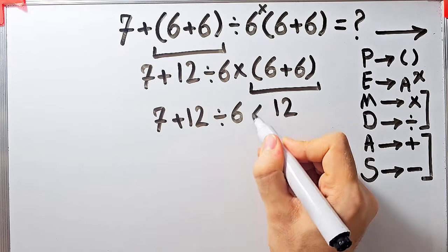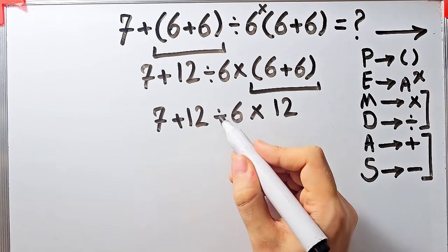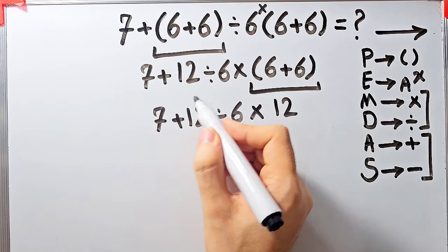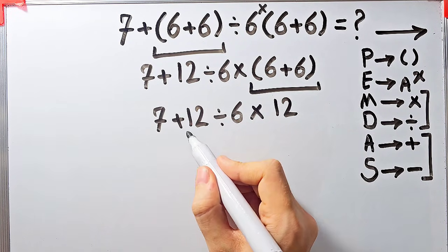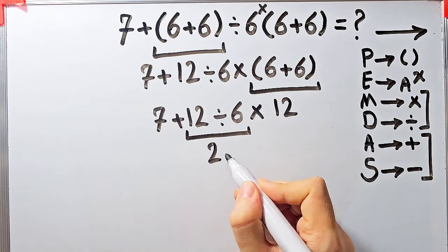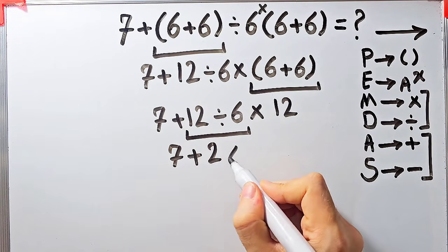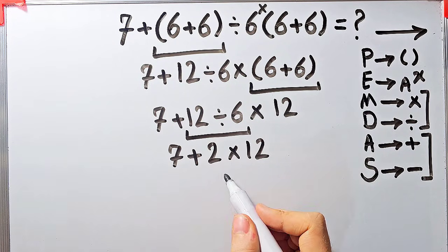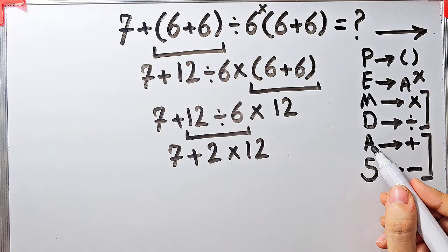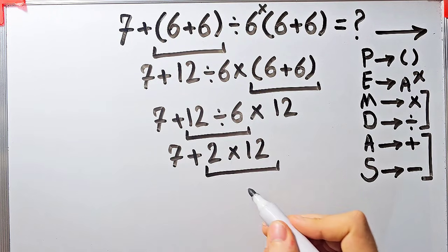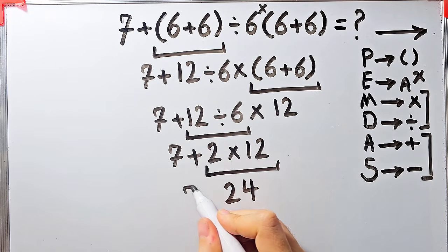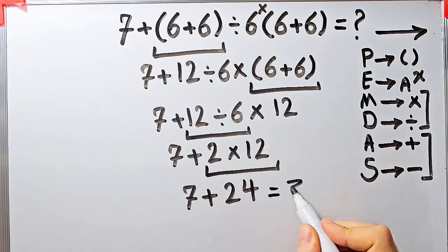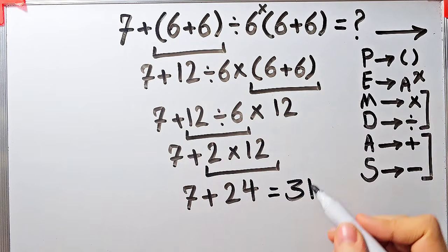In this step we have addition, division, and multiplication. According to PEMDAS, first we simplify the division: 12 divided by 6 equals 2. Now the question is 7 plus 2 times 12. Now we have addition and multiplication. We simplify the multiplication because it has higher priority than addition: 2 times 12 equals 24. Now the question is 7 plus 24, which equals 31. The final answer of this question equals 31.